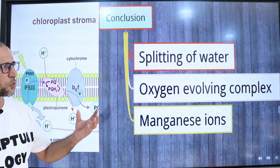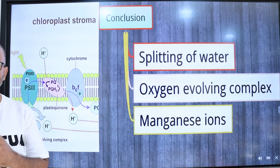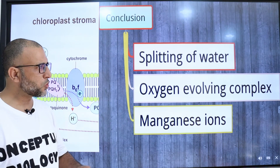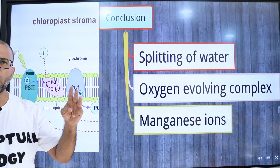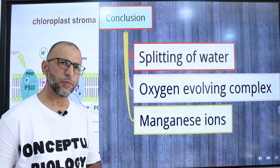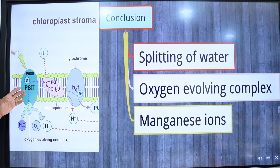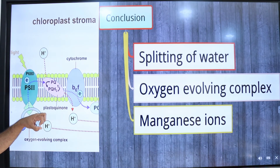To sum up: photolysis is the splitting of water molecules in the presence of light into protons, electrons, and oxygen. It takes place during non-cyclic photophosphorylation; protons are used to reduce NADP, electrons are donated to photosystem II, and oxygen is released as a waste product. The oxygen evolving complex is a group of enzymes attached to photosystem II towards the side facing the thylakoid lumen, and these enzymes bind four positively charged manganese ions that help take off electrons from water and donate them to photosystem II.